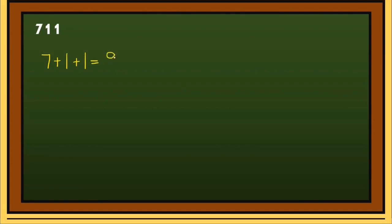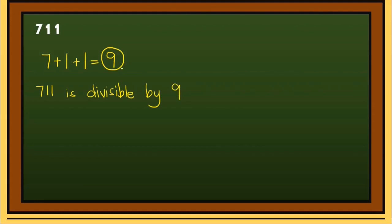I have here 711. Let's check if 711 is divisible by 9. All we have to do is add all the digits: 7 plus 1 plus 1 is equal to 9. 9 is a multiple of 9, so 711 is divisible by 9. And 9 is also a multiple of 3, so 711 is divisible by both 9 and 3.